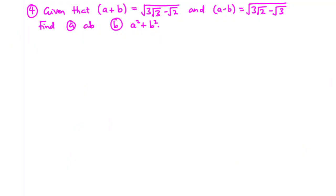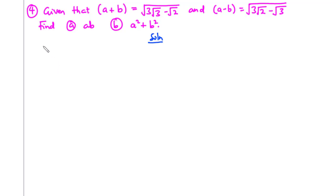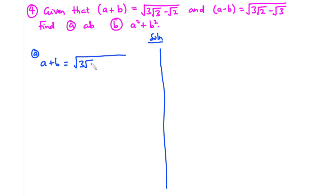Let's solve the fourth question. Given that a plus b is equal to the square root of 3 root 3 minus root 2, and a minus b is equal to the square root of 3 root 2 minus root 3, we are going to find a times b and then a squared plus b squared. Let's call a plus b equation 1 and a minus b equation 2.